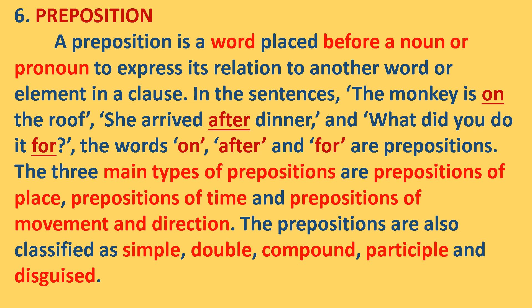Preposition. A preposition is a word placed before a noun or pronoun to express its relation to another word or element in a clause. In the sentences 'The monkey is on the roof,' 'She arrived after dinner,' and 'What did you do it for?' — the words on, after, and for are prepositions. The three main types of prepositions are prepositions of place, prepositions of time, and prepositions of movement and direction. Prepositions are also classified as simple, double, compound, participle, and disguised.